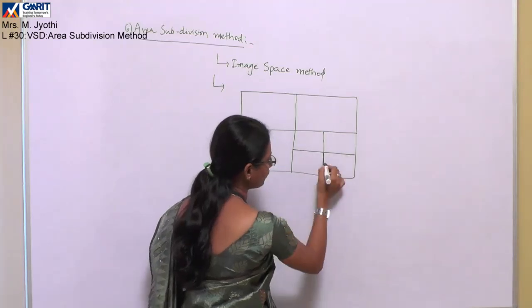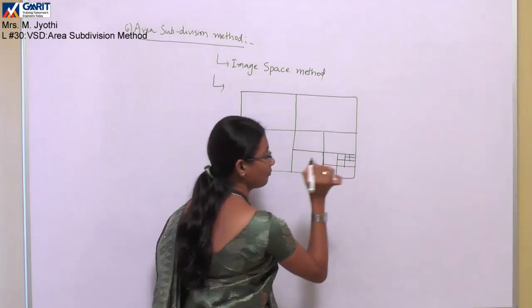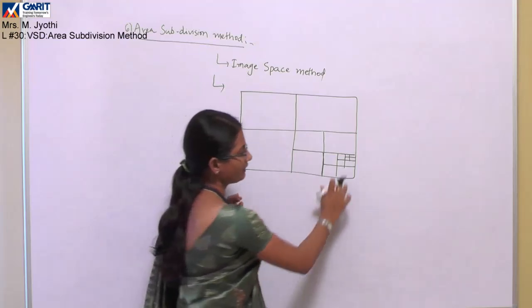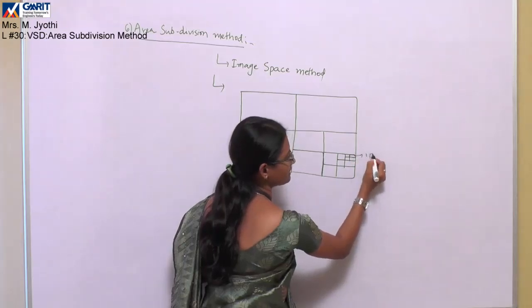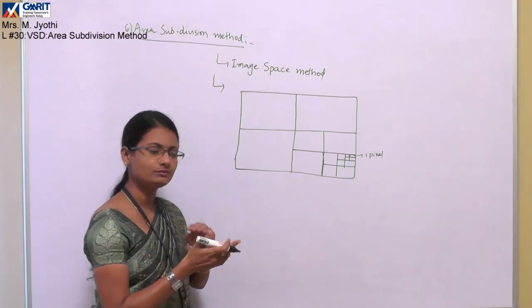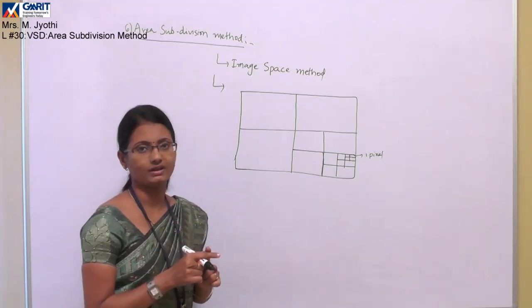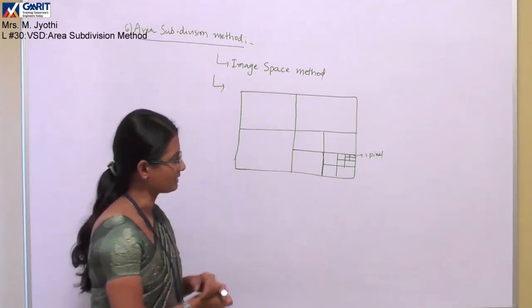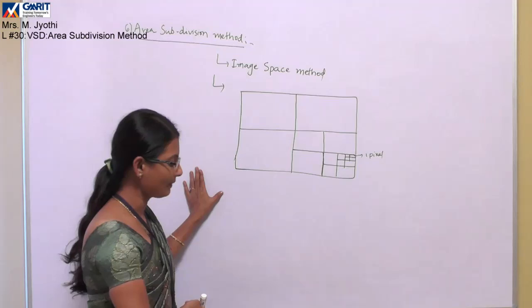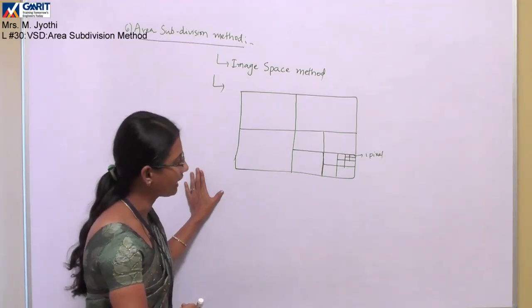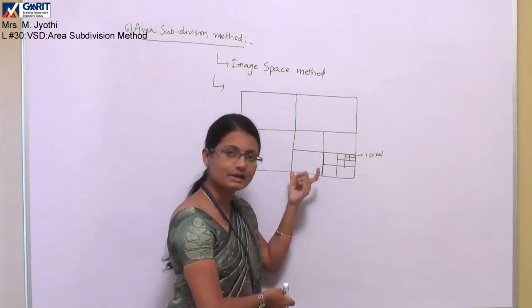Each area should be divided into four sub-areas again if any surface is present. This division process continues until the area represents only one pixel — at that point, do not divide further because a pixel should not be divided into four areas. In this method, whenever you want to find out whether an area is surrounded by any surface, the surface boundary must be compared with your area boundary.